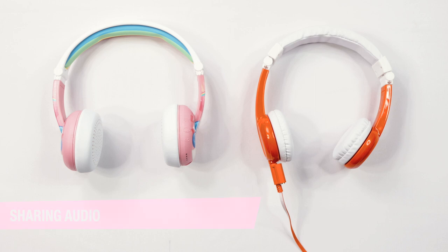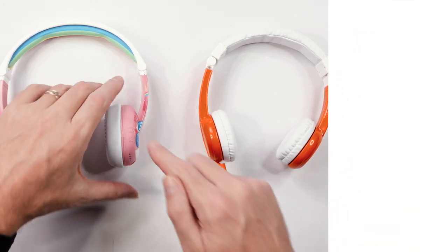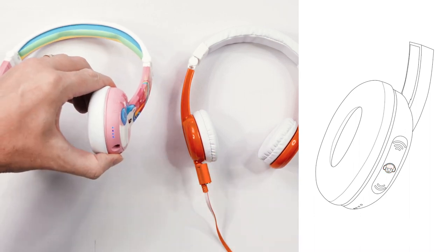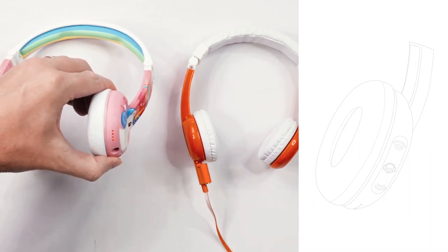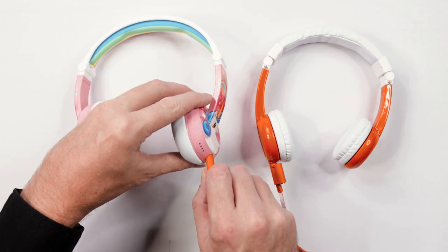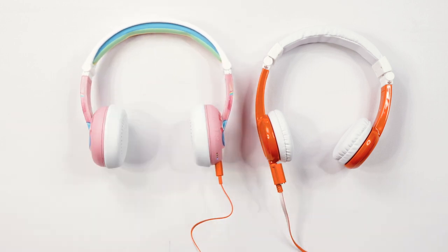To share the audio from your BuddyPhones, first power on your headphones by pressing the multi-function button for two seconds. Once it is paired, take the audio cable from your wired headphones and connect it to your BuddyPhones. The audio is now shared.